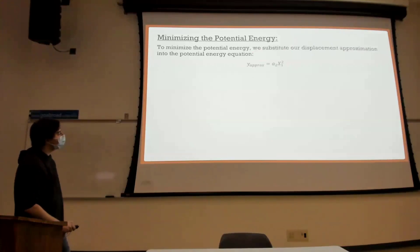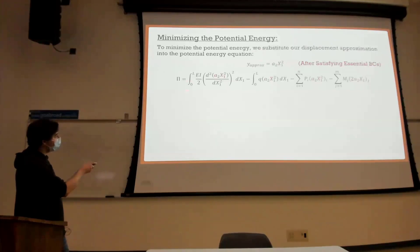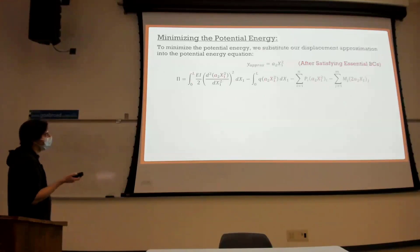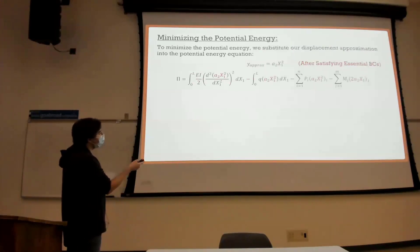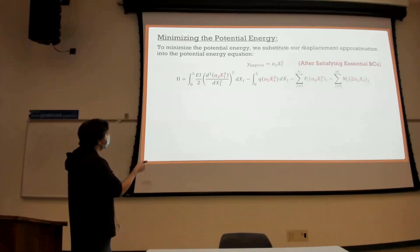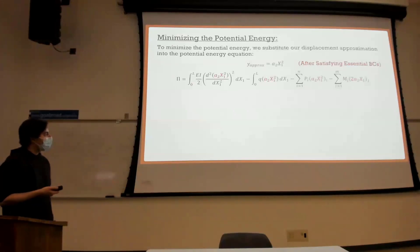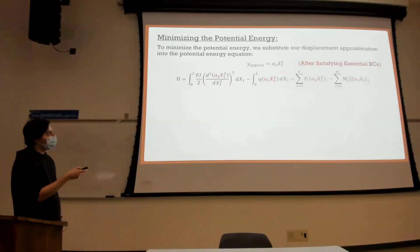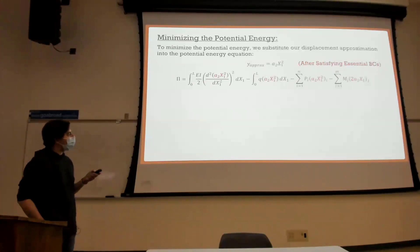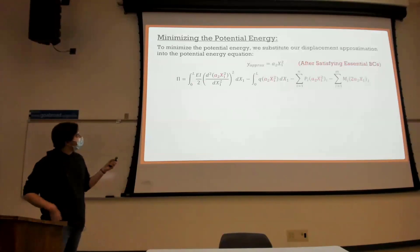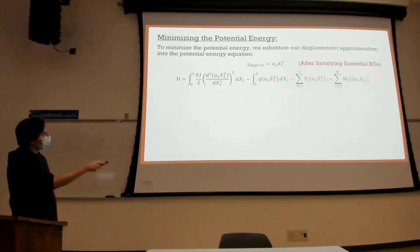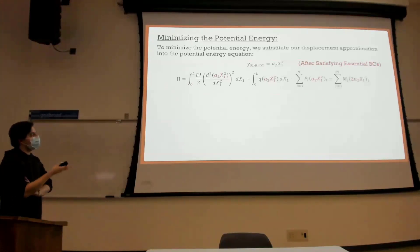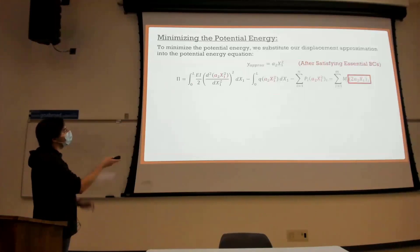After we have an approximation satisfying the essential boundary conditions, we substitute it into our potential energy equation. Even though it looks really bad, we only have one unknown: EI is known, and a₂ is our unknown. The question is how exactly do we determine the equations. If we had unknowns a₂, a₃, a₄ — three unknowns — we need three equations. Just like virtual work, we have to come up with a special way of getting these equations.